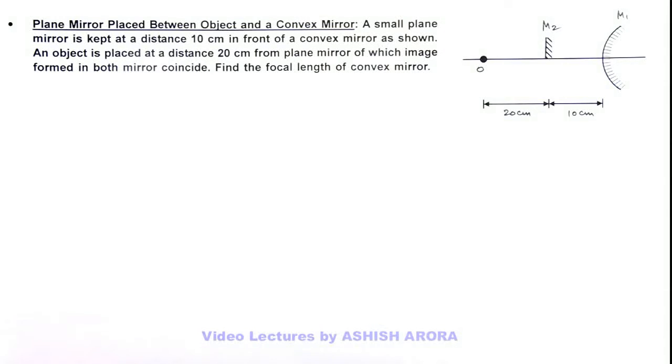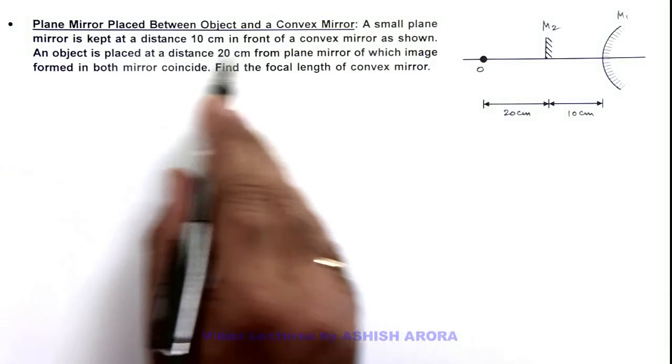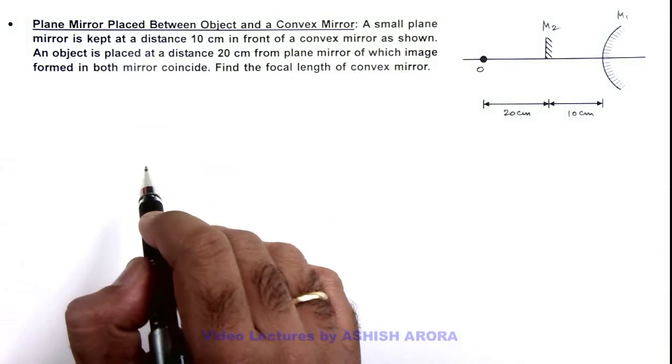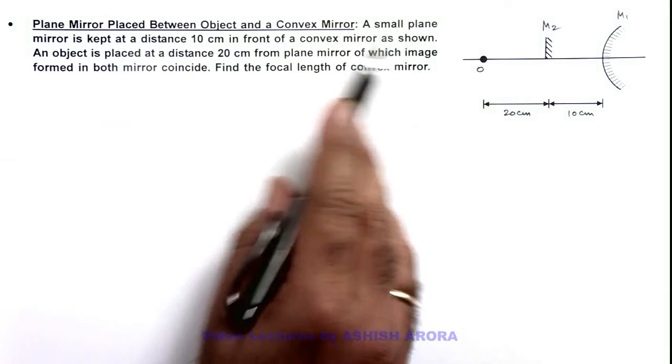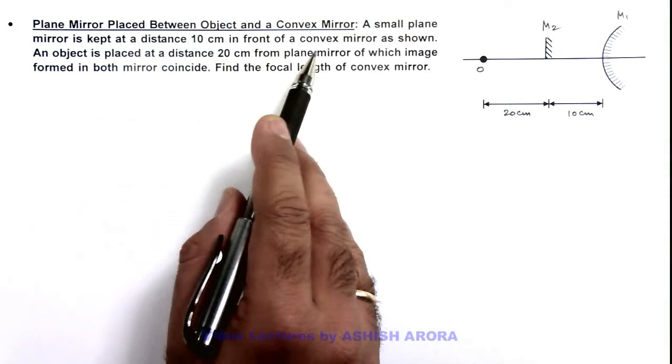In this illustration we'll study a situation where a plane mirror is placed between an object and a convex mirror. Here you can see a small plane mirror is kept at a distance of 10 centimeters in front of a convex mirror.